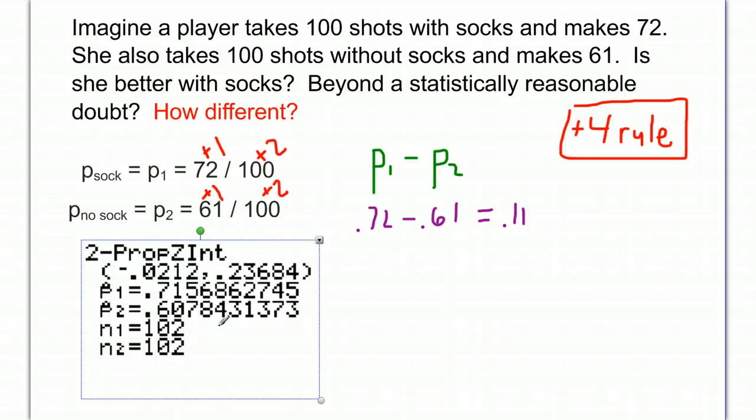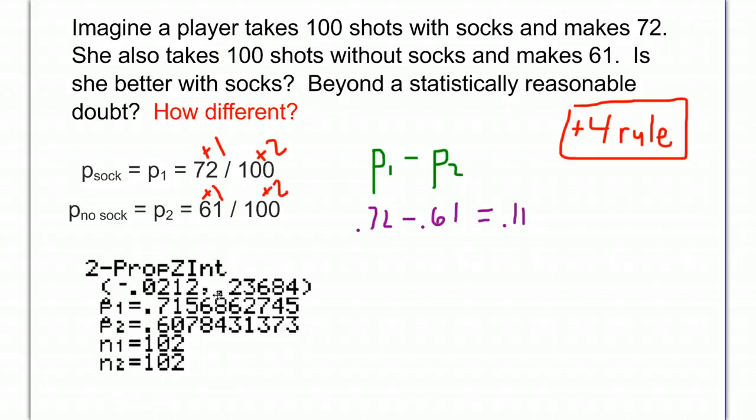Now this looks nothing like our nice little 11% we were hoping for. Instead, it's given in this interval form, and it doesn't tell us the middle. So we have to do a little bit more work to translate this into something more readable or usable.